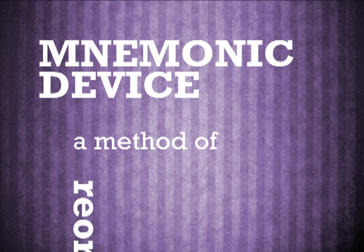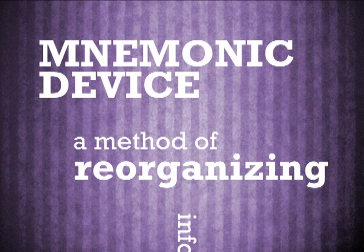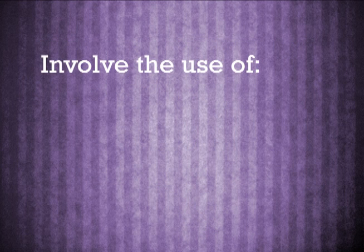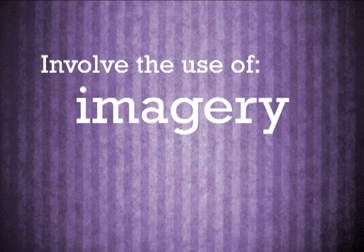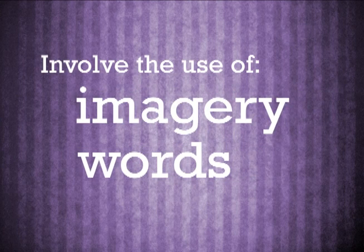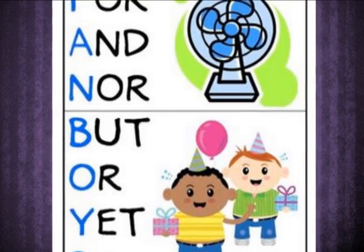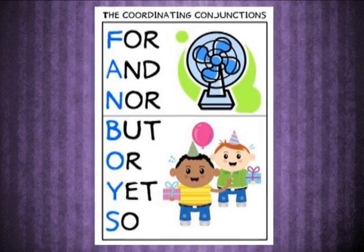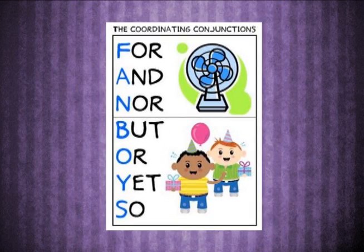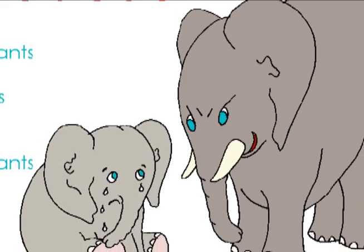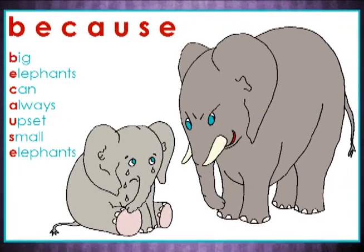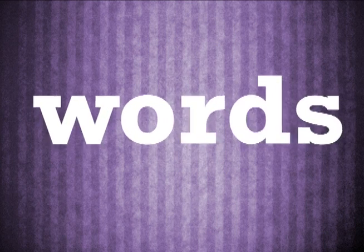Mnemonic device is a method of reorganizing information to make information easier to memorize. Mnemonic devices involve the use of imagery and the use of words. These two methods are very useful in enhancing the ability of memorization. As one of the factors of mnemonic device, imagery plays a significant role in aiding memorization.